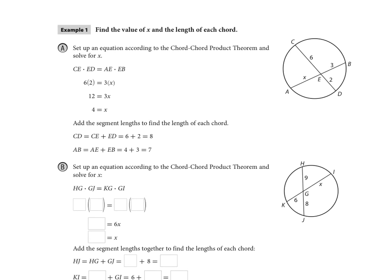Example one, we're going to go through and set up the equation and then plug in all the information. And so they set it up for us. We have CE times ED is going to equal AE times EB. Plug in everything that's on the diagram there. Six times two is going to equal X times three, or three X. And so we can do some quick math there. Divide by three, and we get that X is four.